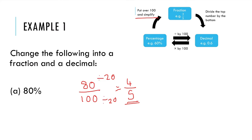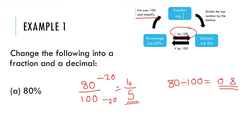Then if I want to go from a percentage to a decimal, I just divide it by 100. So I take 80 and divide by 100 to give me 0.8. So 80%, 4 over 5, and 0.8 are all effectively the same number, just represented in different forms.